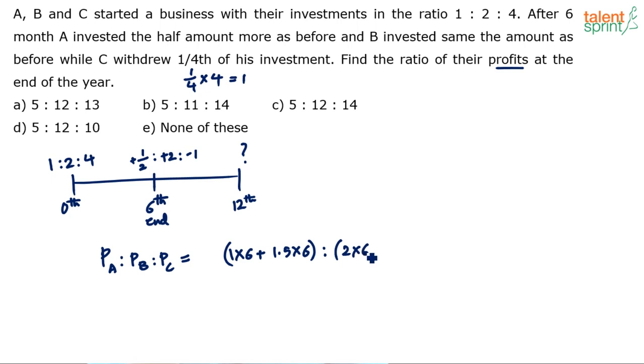How about B? 2 rupees for the first six months. And after that, 2 rupees plus 2 rupees - 4 rupees for the remaining six months. How about C? His investment was 4 rupees for the first six months. And after that, it was 4 rupees minus 1 rupee - now it is only 3 rupees for the remaining six months. 1 rupee for six months, 1.5 rupees for the remaining six months. 2 rupees for six months, then 4 rupees for the remaining six months. 4 rupees for the first six months, and then 3 rupees for the remaining six months.